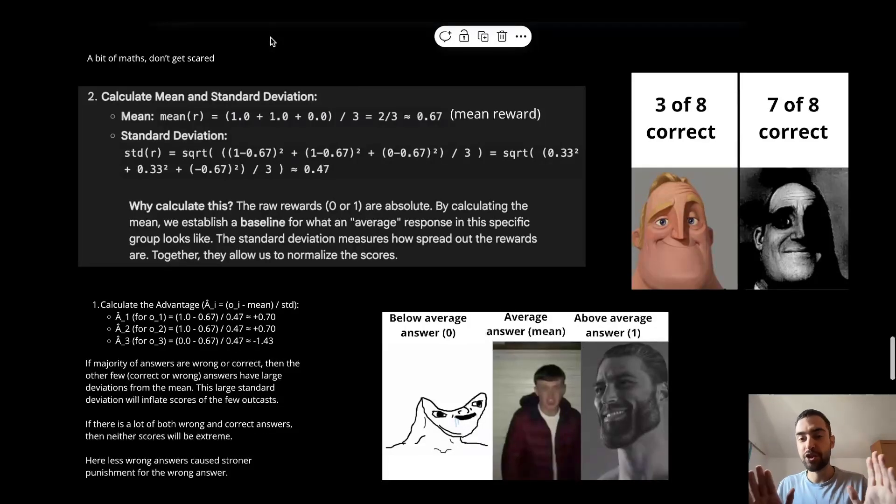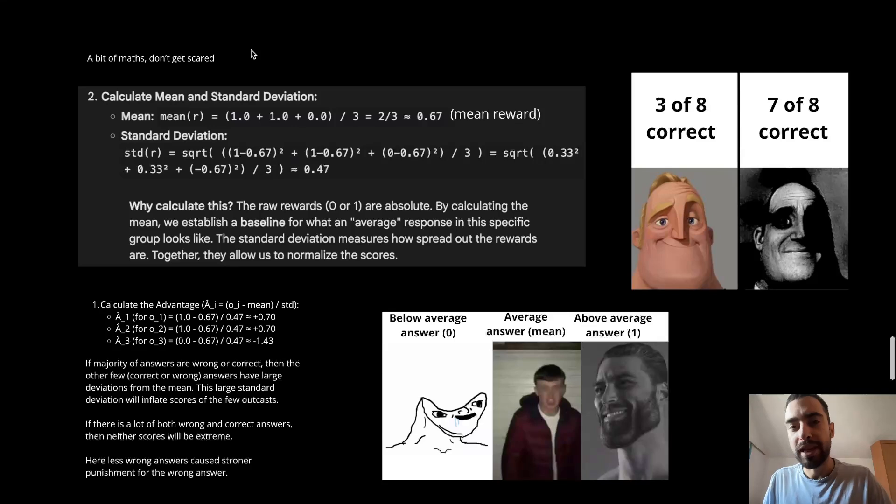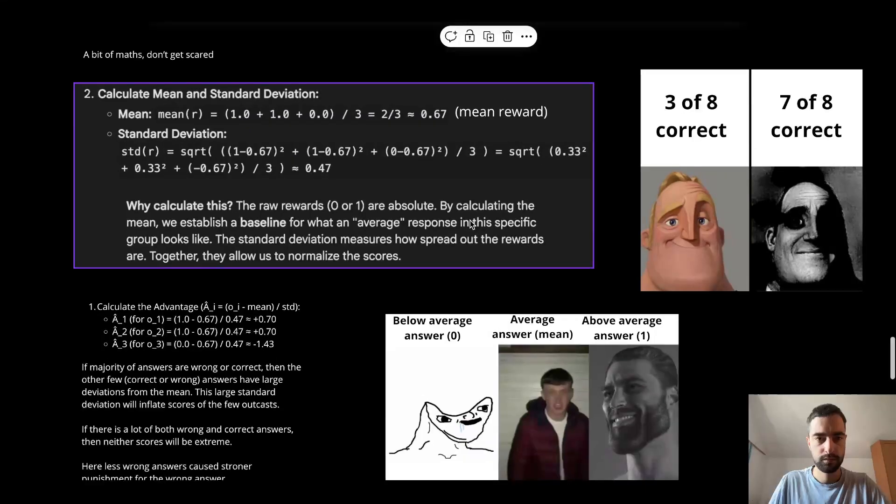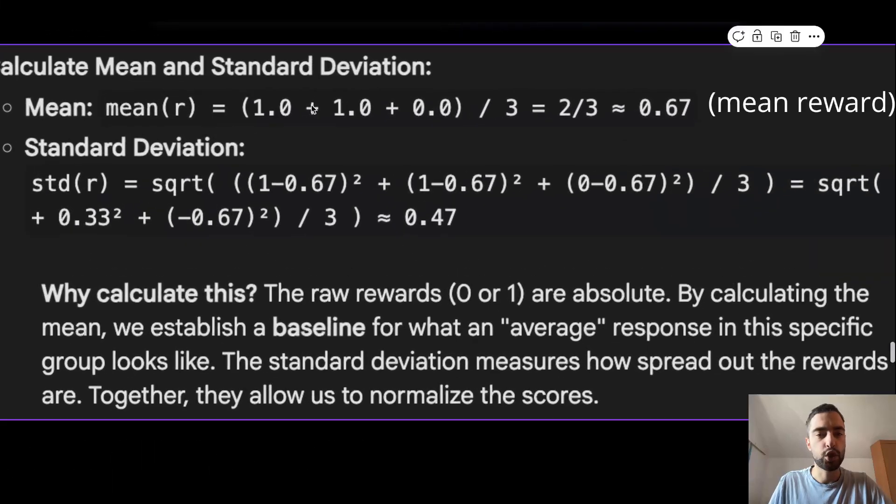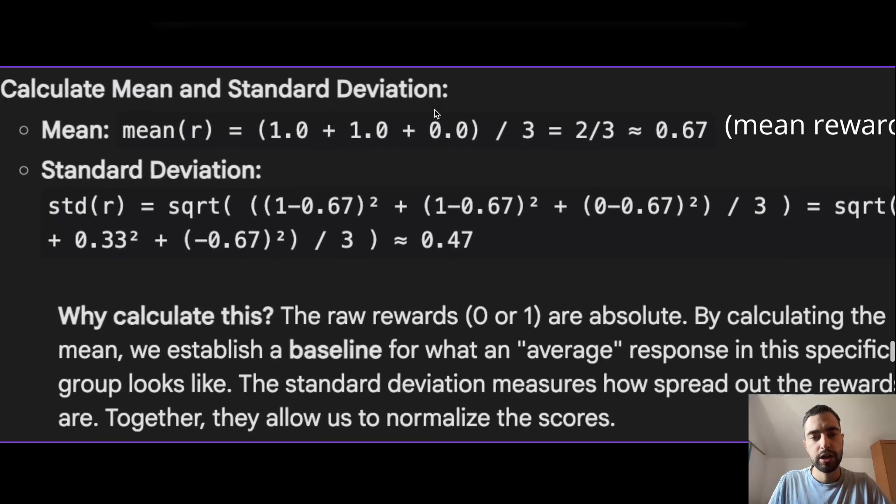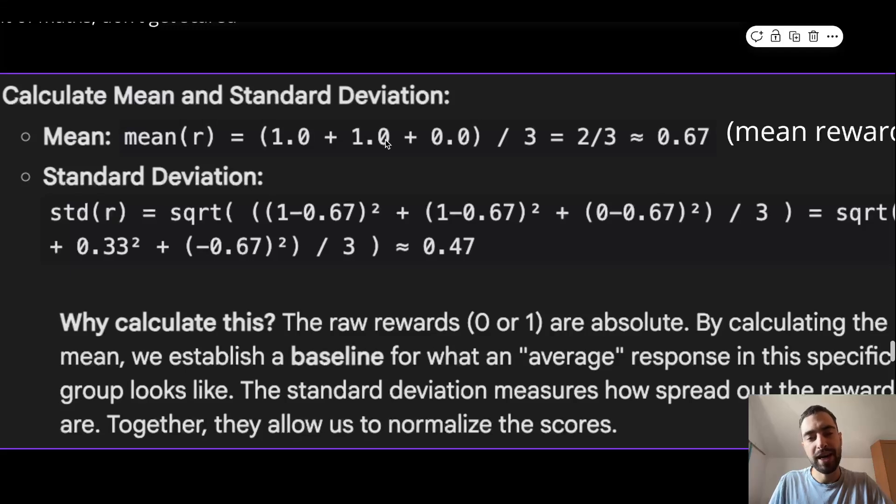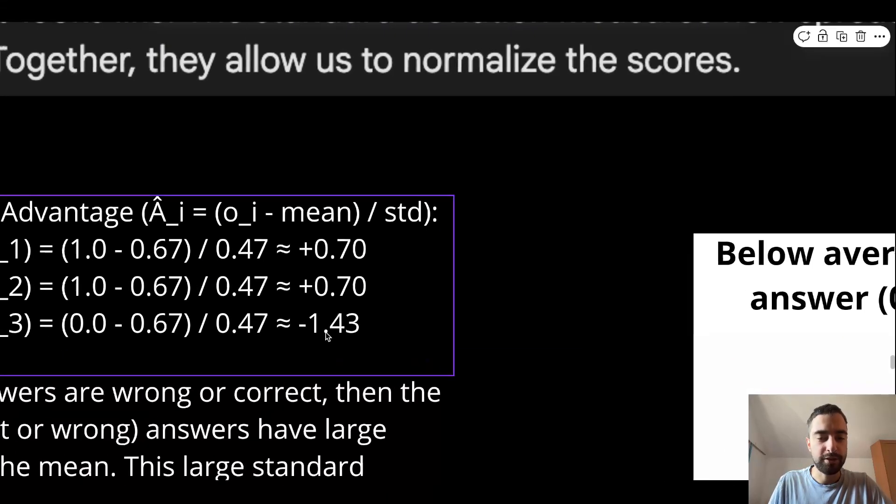Guys, just a bit of math. Please don't get scared. It's easy. So our goal is if we have only a few or one kind of wrong or correct answers, then we want to make the advantage for those answers very big. So in our case, we had two correct answers and one wrong answer. So we assign one and one for correct answers in the beginning and zero for the wrong answer. And we already know that because we have just one wrong answer and two correct, we want to punish this wrong answer more. So later you will see that the punishment for this wrong answer, its absolute value is higher than rewards. So we get a bit of reward for both correct answers.